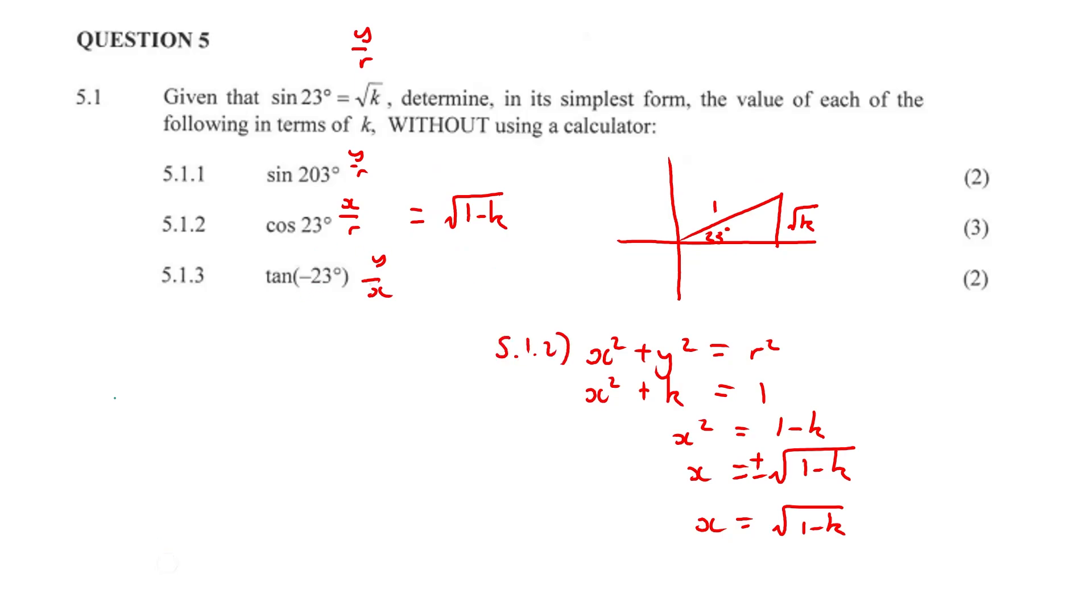Tan negative 23. If I just change the color quickly. Question 5.1.3, tan negative 23 is equal to negative tan 23 if we were to write it. And our tan identity is negative sine 23 over cos 23.